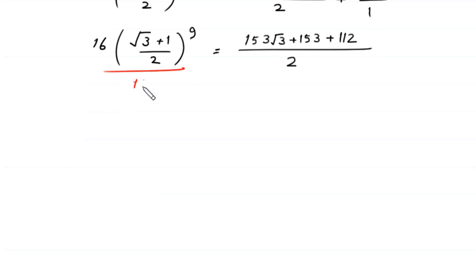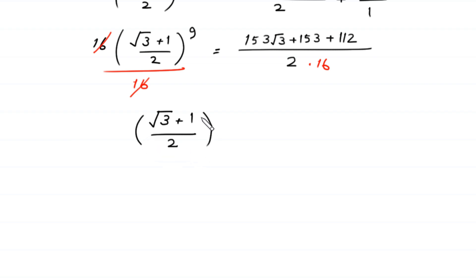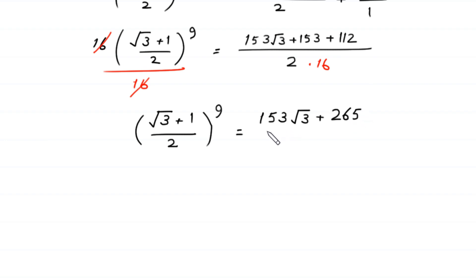From here we divide both sides by 16. The 16 cancels on the left side, leaving square root of 3 plus 1 over 2, whole to the power 9, equals 153 times square root of 3 plus 265, divided by 2 times 16, which is 32. So the answer is (153 times square root of 3 plus 265) over 32.